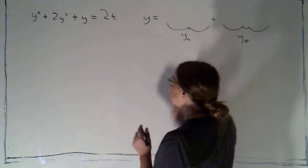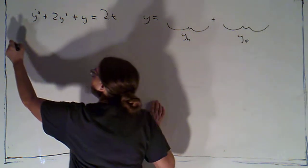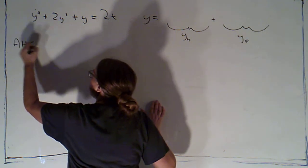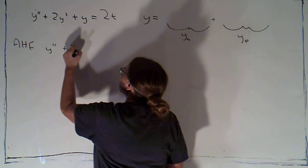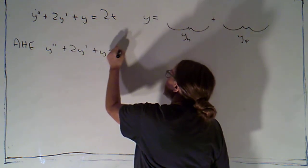So let's find the solutions to the associated homogeneous equation first. That would be y double prime plus 2y prime plus y equals zero.